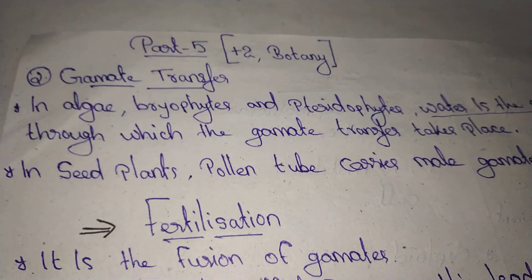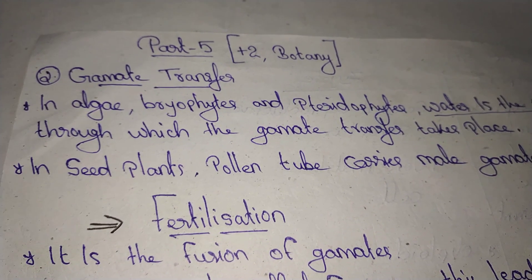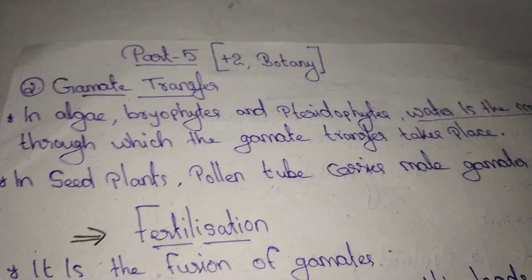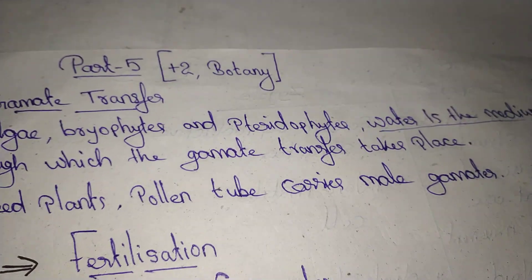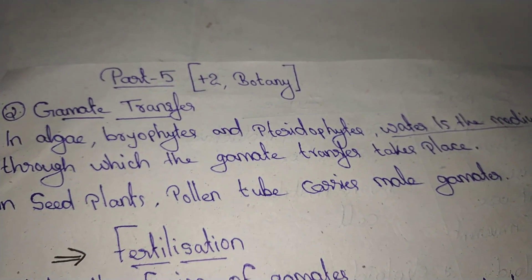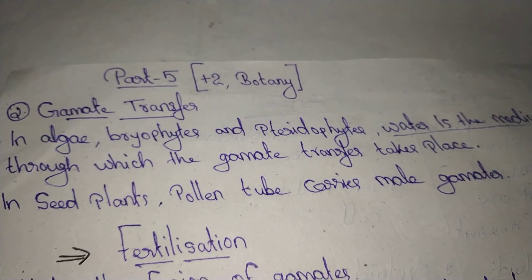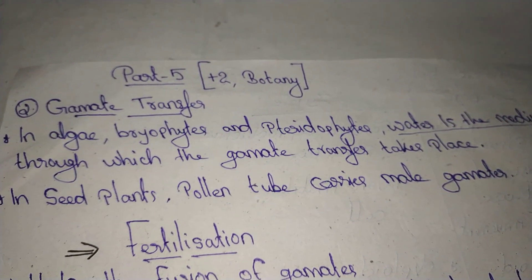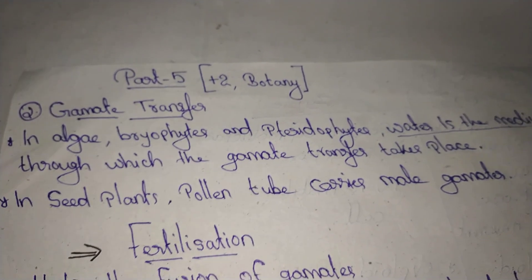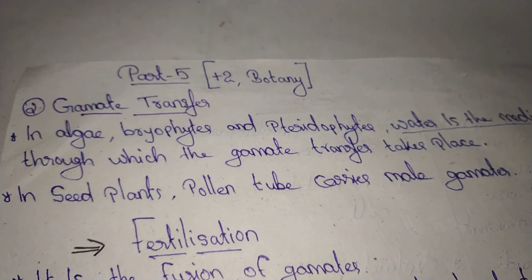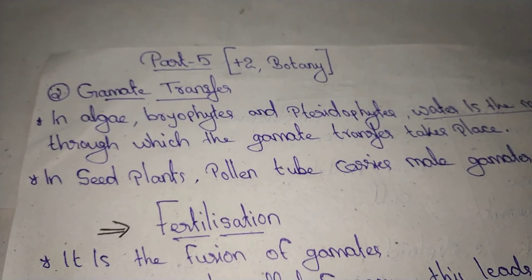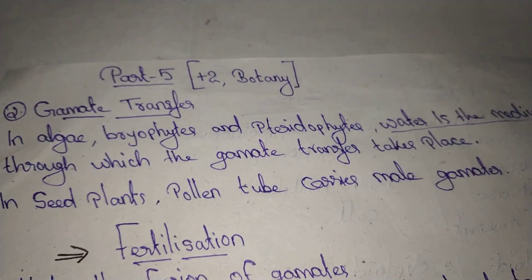In seeded plants, the pollen tube carries the male gamete. The pollen tube is the medium through which the male gamete is transferred.